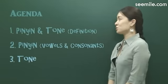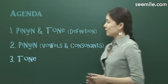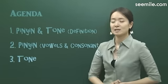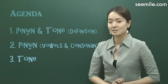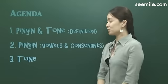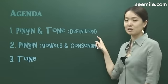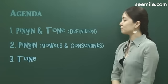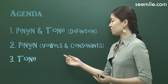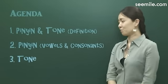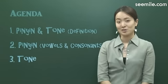Let me introduce our whole lesson plan. Seven Days for Chinese Mandarin Pronunciation consists of seven days of classes, divided into three parts. Today we are going to talk about the definition and meaning of pinyin and tone. From tomorrow, we are going to go into the vowels and consonants, which might take four days. And finally, we are going to talk about tone.